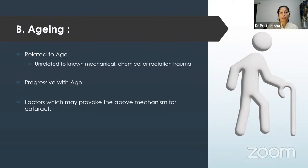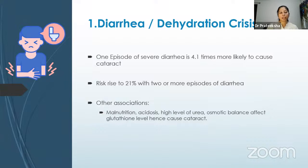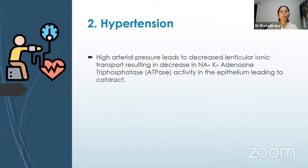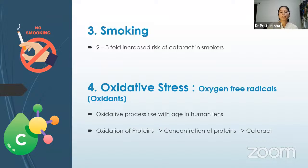Age itself is a risk factor — cataract always progresses with age. Factors that may provoke cataract development include diarrhea or dehydration crisis: a single episode of severe diarrhea is 4.1 times more likely to cause cataract, and the risk increases to 21% with two or more episodes. Associated malnutrition, acidosis, high urea, osmotic imbalance, and decreased glutathione levels also accelerate cataract formation. With aging and hypertension, high arterial pressure leads to decreased lenticular ionic transport and decreased sodium-potassium ATPase activity in the epithelium, leading to cataract.